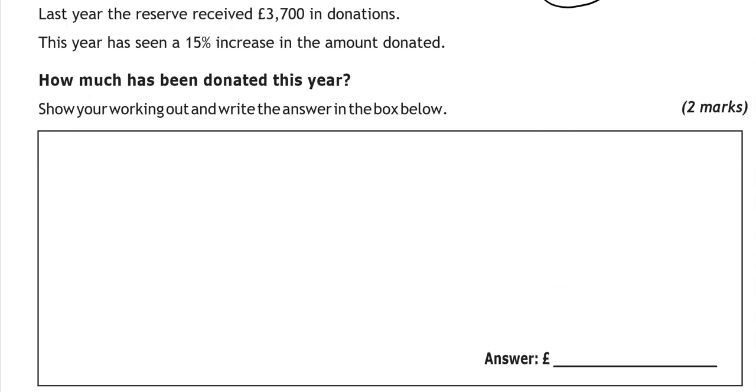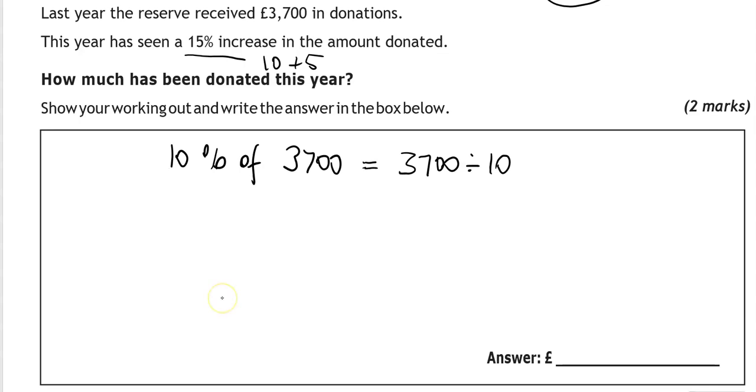Last year, the reserve received £3,700 in donations. This year has seen a 15% increase in the amount donated. How much has been donated this year? Show your working out and write the answer in the box below. So, as we can't use a calculator, we're going to split this into 10% and 5%. So 10% of £3,700, we work it out by going £3,700 divided by 10, which means we move the decimal point to the left, so we'll get £370, or knocking off a 0 as you might have heard it.